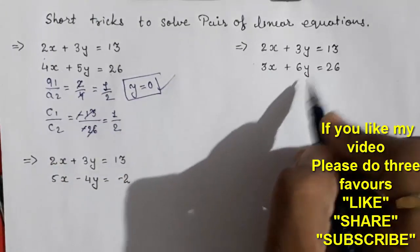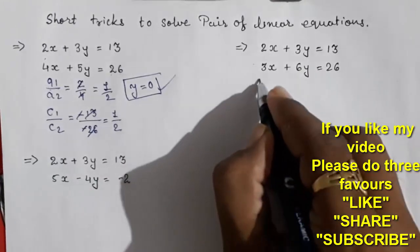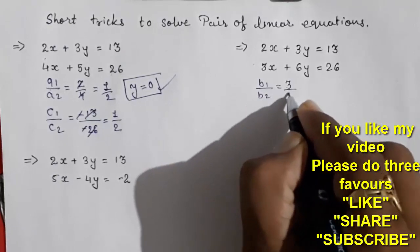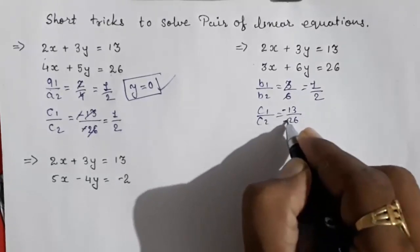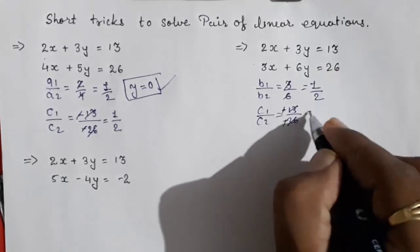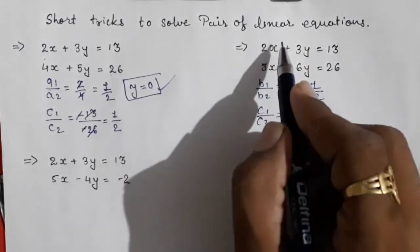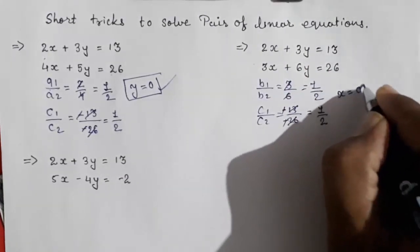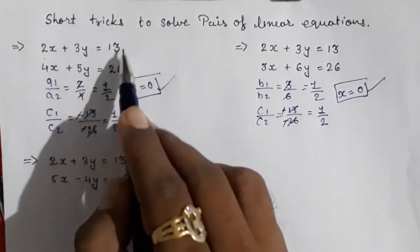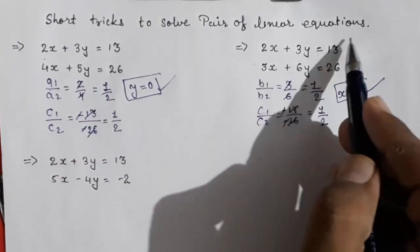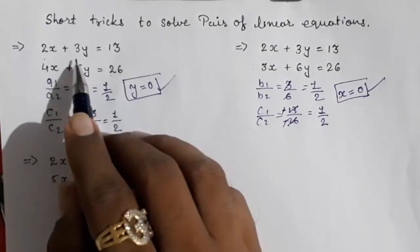Similarly, here b1/b2 is 3/6, which gives 1/2, and c1/c2 is 13/26 (or -13/-26 in standard form), which also gives 1/2. So if b1/b2 and c1/c2 are equal, then x = 0 directly. By seeing only the equation: if a1/a2 = c1/c2 then y = 0, and if b1/b2 = c1/c2 then x = 0. Then you can find the other variable by substitution.